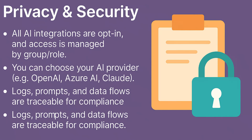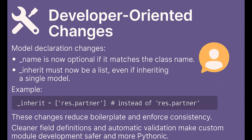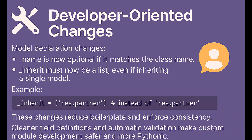Performance optimizations include faster menu loading with improved caching, especially noticeable in large databases, and better ORM search performance. The read_group method now supports batched queries for grouped list views, and the ORM uses optimized filters under the hood for speed, along with improved calendar rendering and faster report generation for large datasets. On the developer side, _name is now optional if it matches the class name, and _inherit must now be a list even if inheriting a single model — for example, _inherit equals ['res.partner'] as a list.